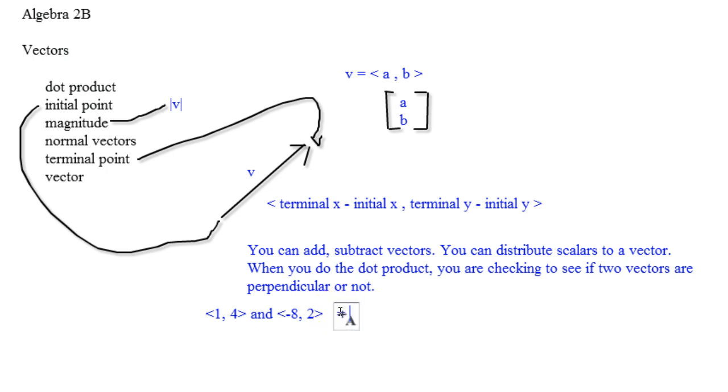The dot product works like this. You take the first two coordinates and multiply them. So you go 1 times -8, and then you add that with 4 times 2. That's going to be -8 plus 8, which equals 0. So that means these two are perpendicular.